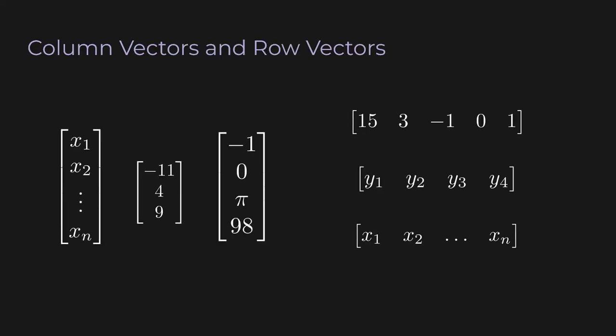Now let's talk about column vectors versus row vectors. Up until now, I've been writing vectors as column vectors, where the entries go from top to bottom. But you also have row vectors, where the entries go from left to right. For example, in the top-right row vector, the first entry is 15 and the last entry is 1. You might be wondering why make a distinction — at the end of the day, they're just lists of numbers.